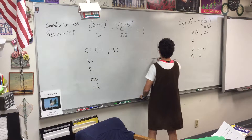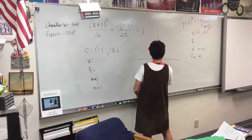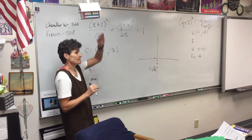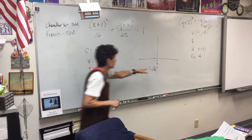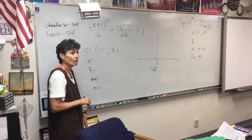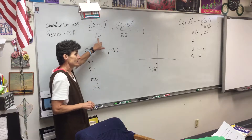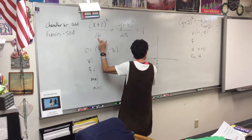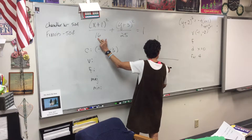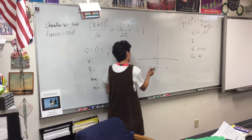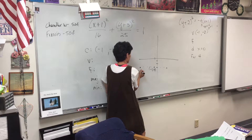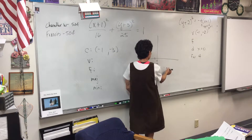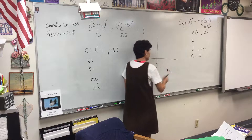Now the vertices are pretty easy too. The vertices are those points you connect to make the oval. You start at the center and do some counting. How far do you count? Square root of these denominators. The 16 tells me I'm going to count sideways — 1, 2, 3, 4. So this point would be negative 5, negative 3, and this one would be 3, negative 3.